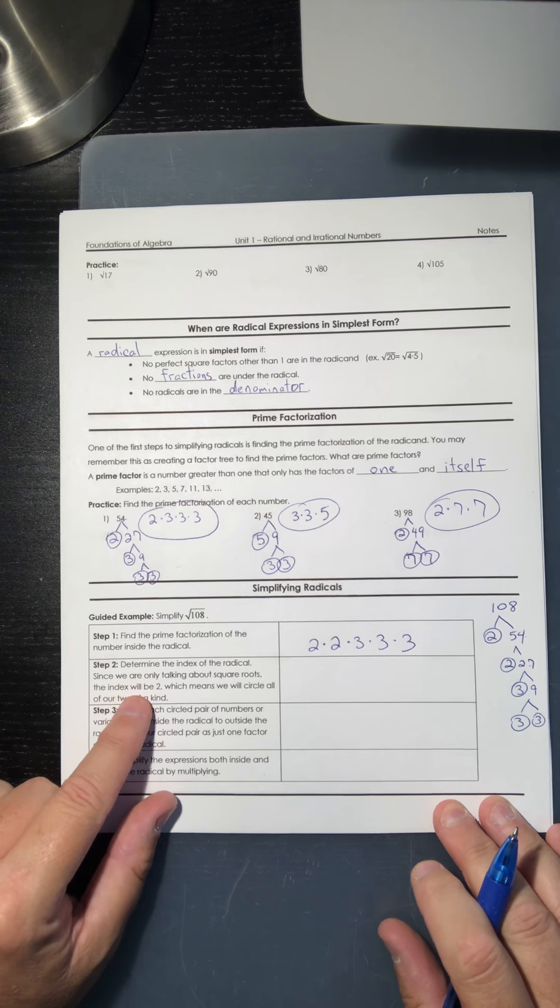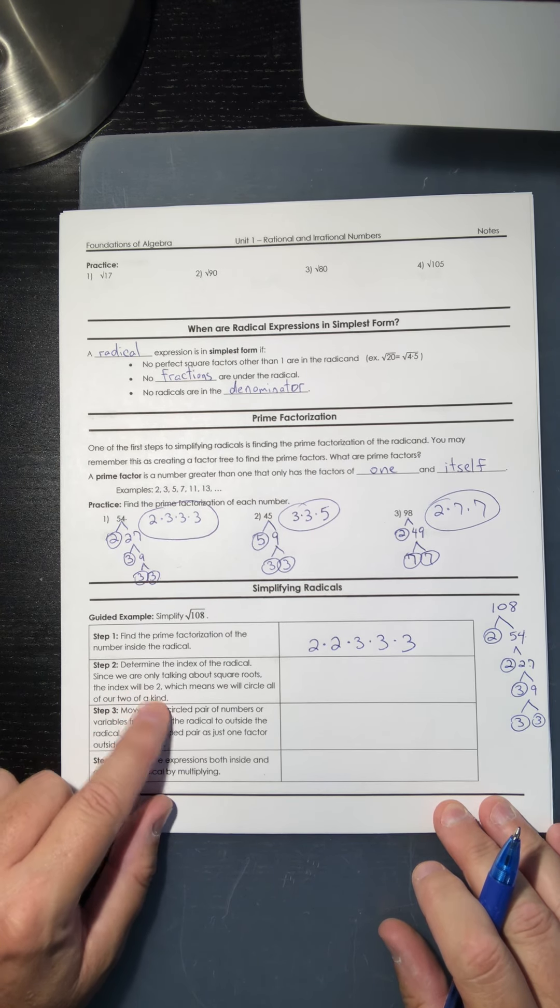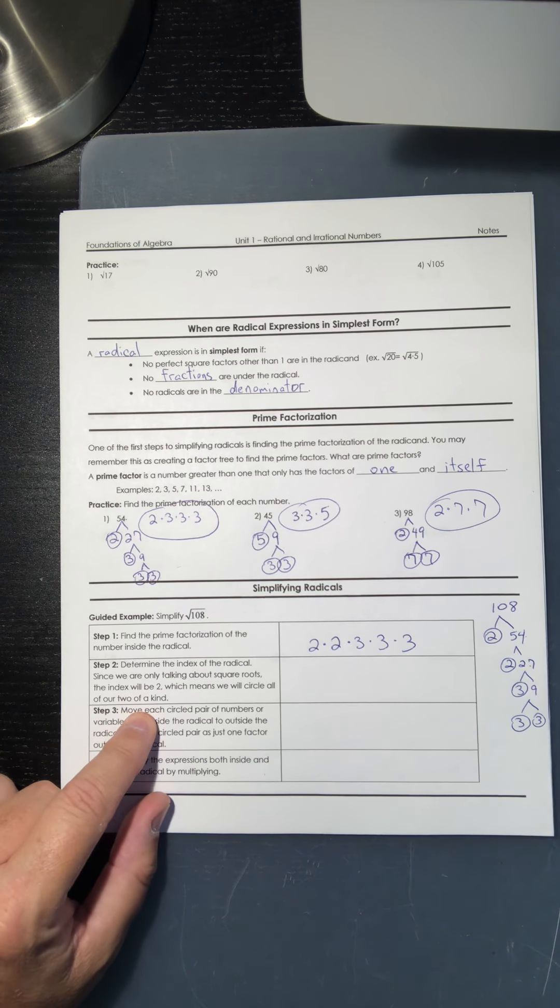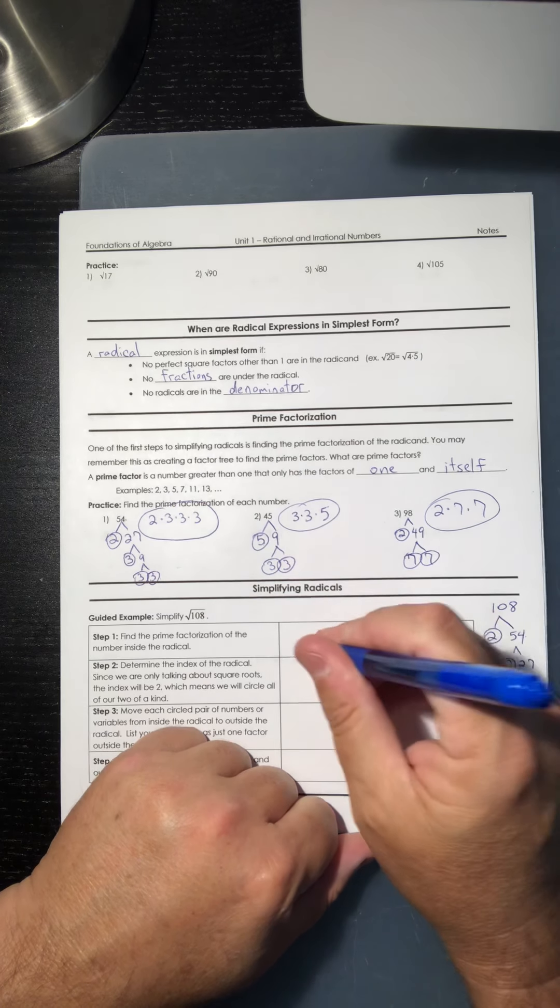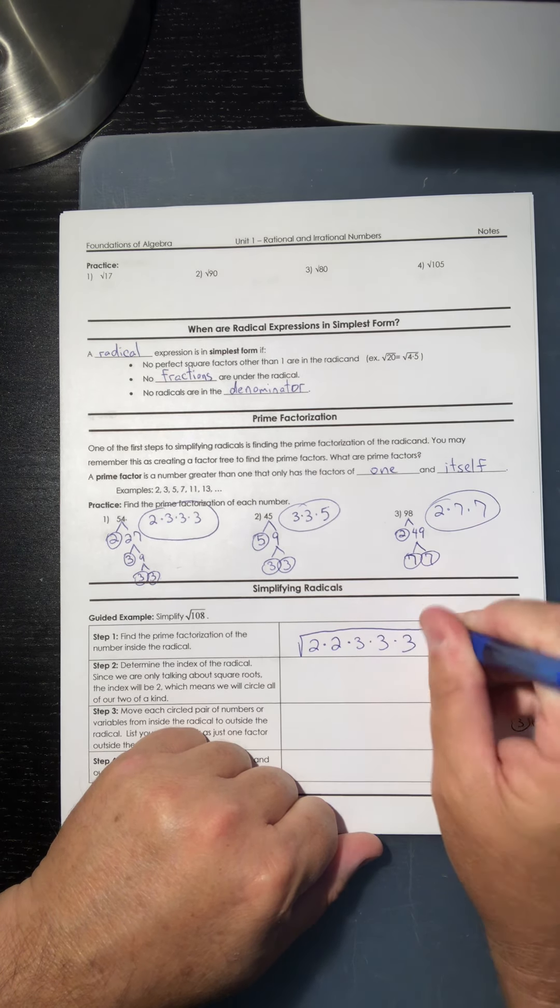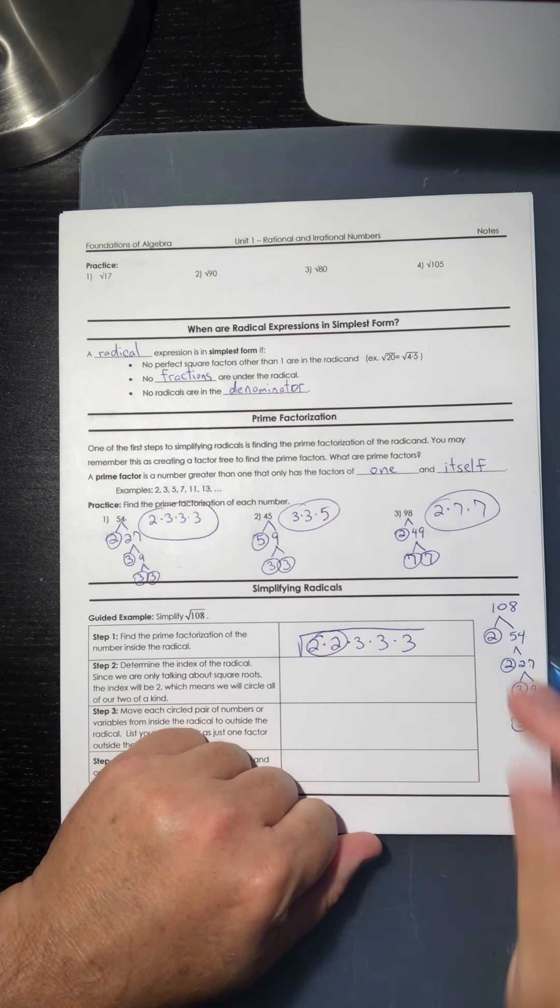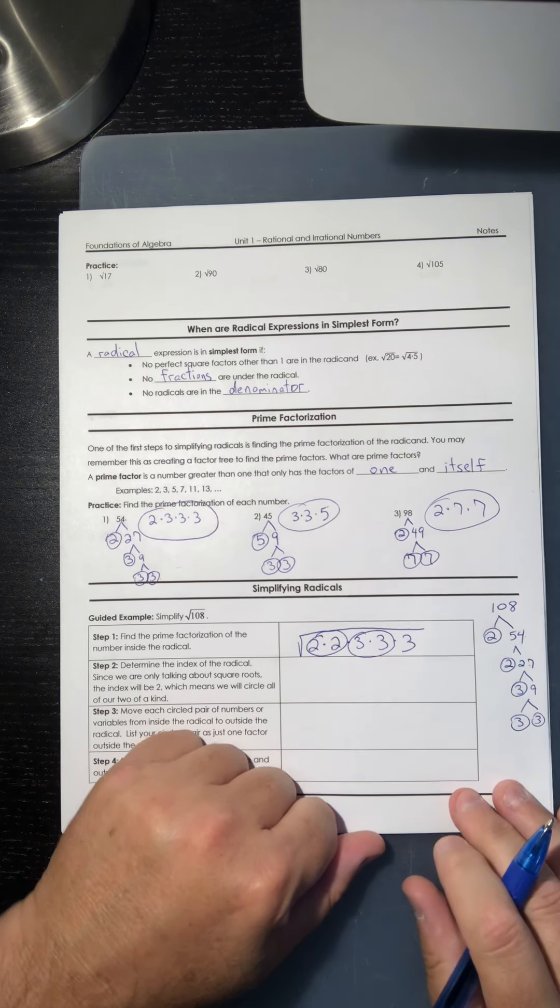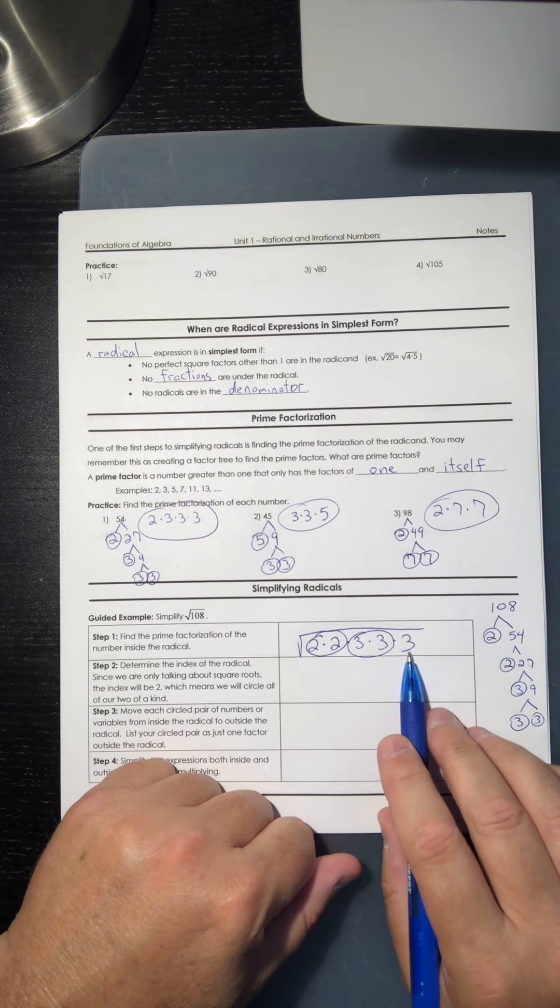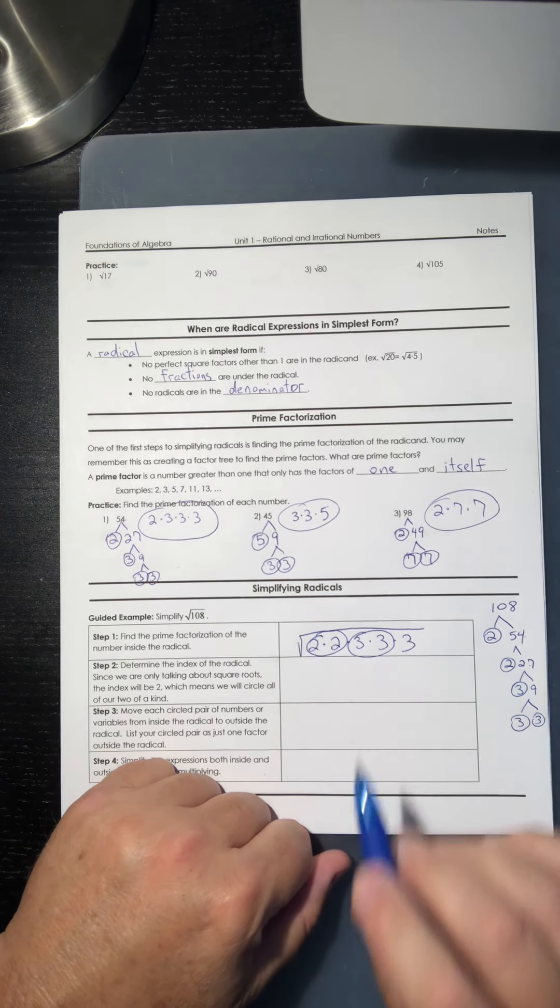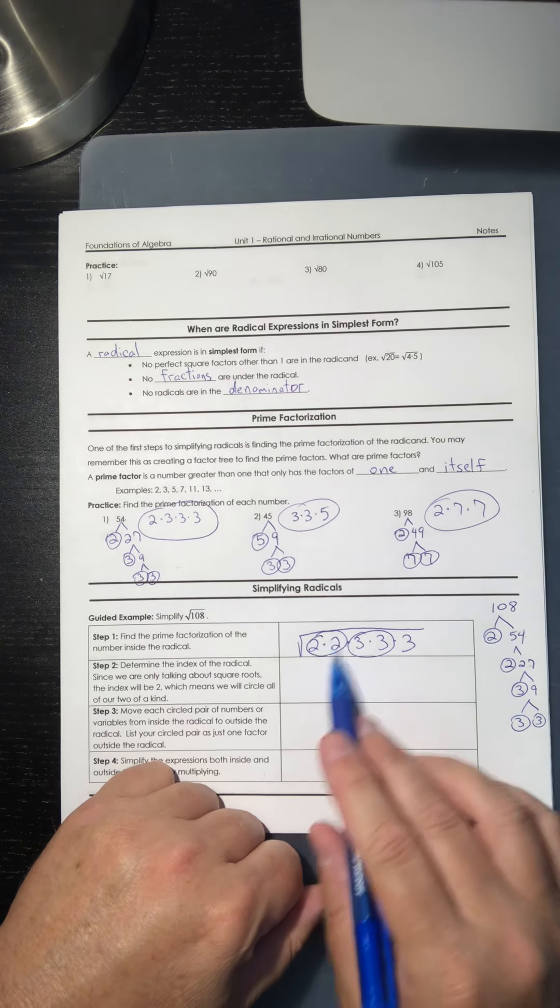So next it says determine the index of the radical. Since we are only talking about square roots, the index will be 2, which means we will circle all of our two of a kind. Because long story short, this is all underneath the radical now. We're going to look for pairs of numbers. Well, I've got a pair of twos and I've got a pair of threes. This three right here doesn't have a pair. That tells me that that three is going to stay underneath the house in my answer.